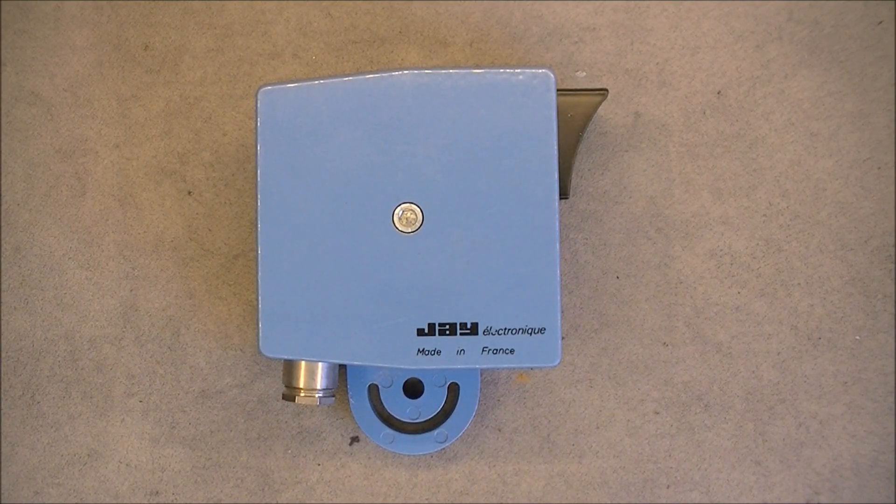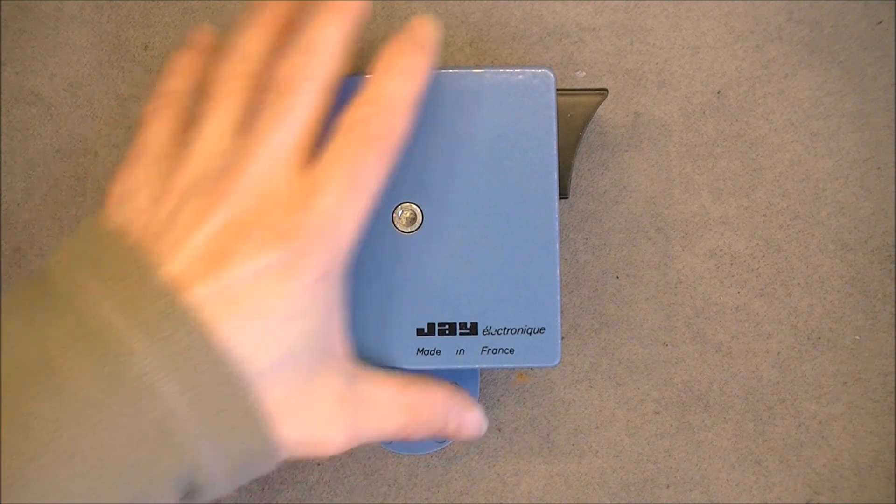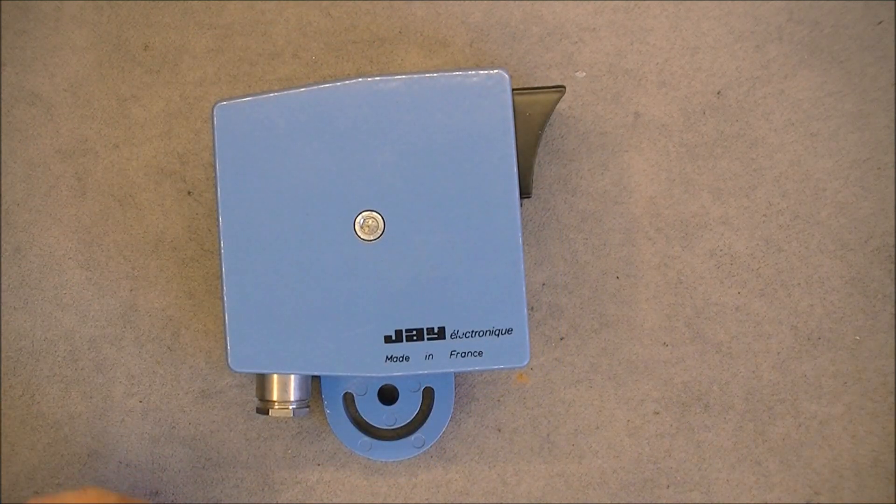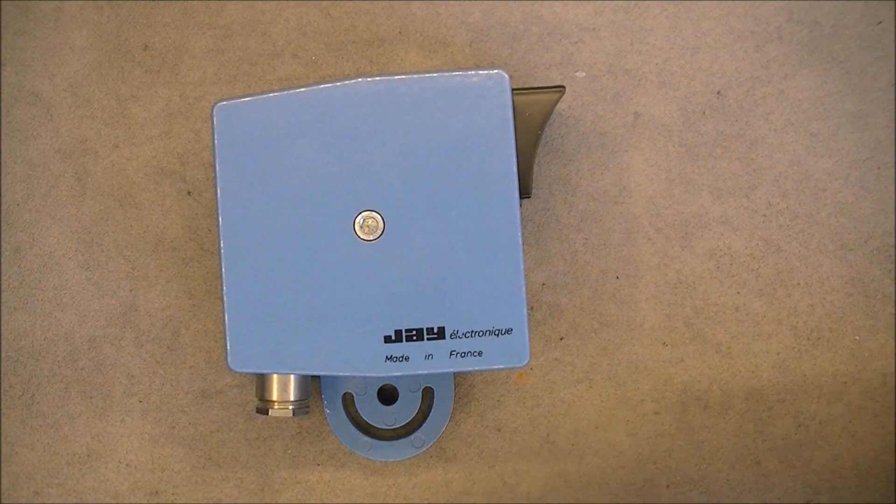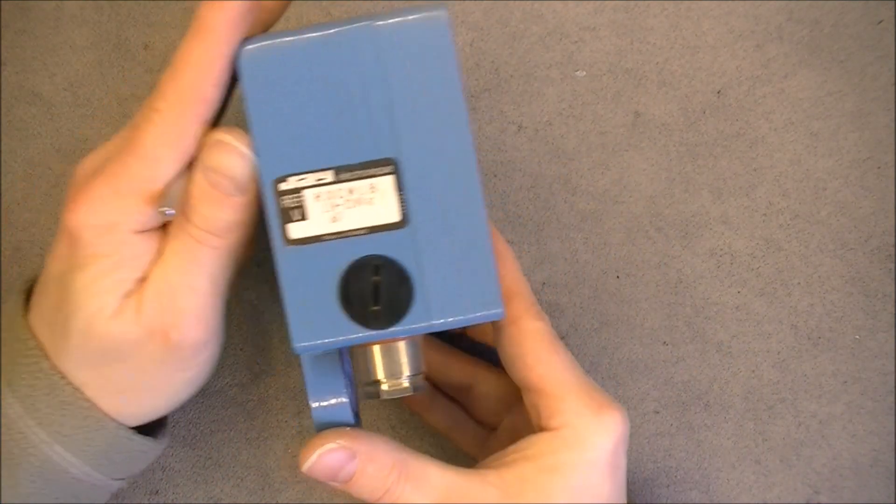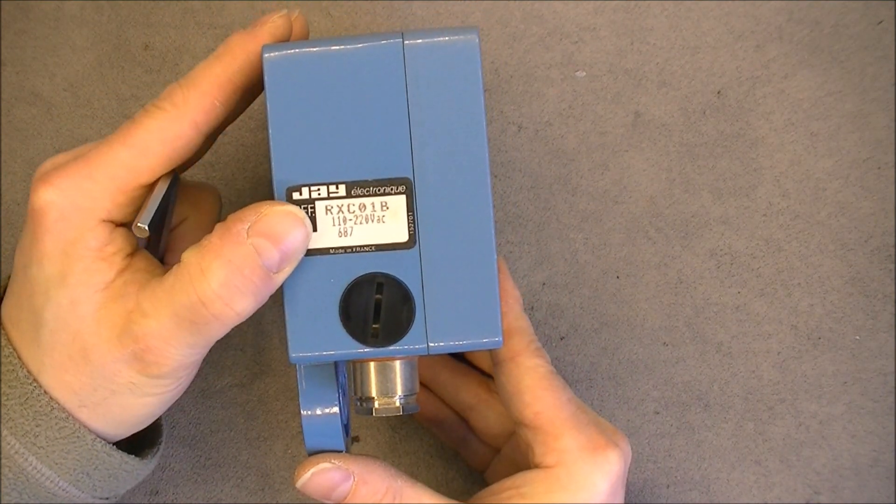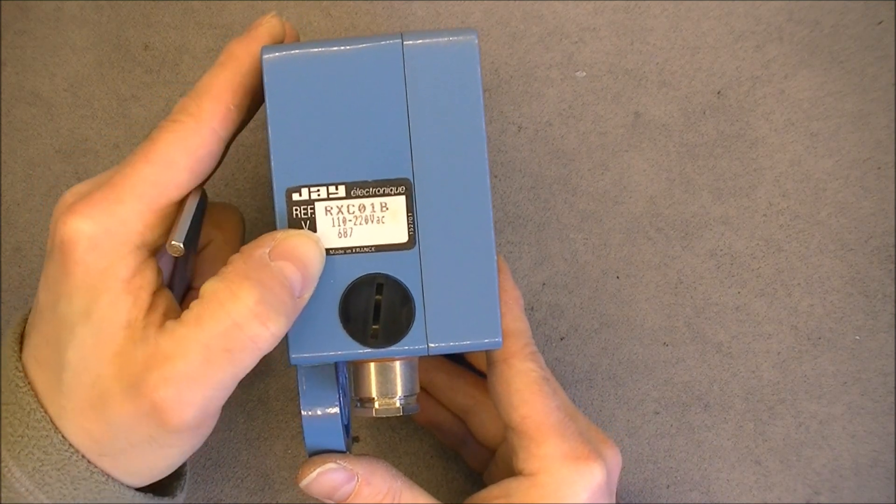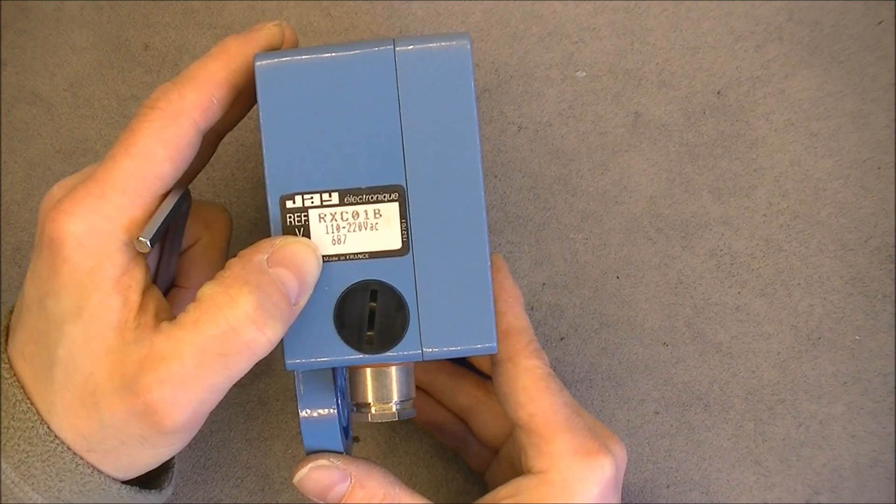Hi, today we will have a look inside this photoelectric beam from the flea market by J.Electronic in France. Model number RXC01B, serial number 687.